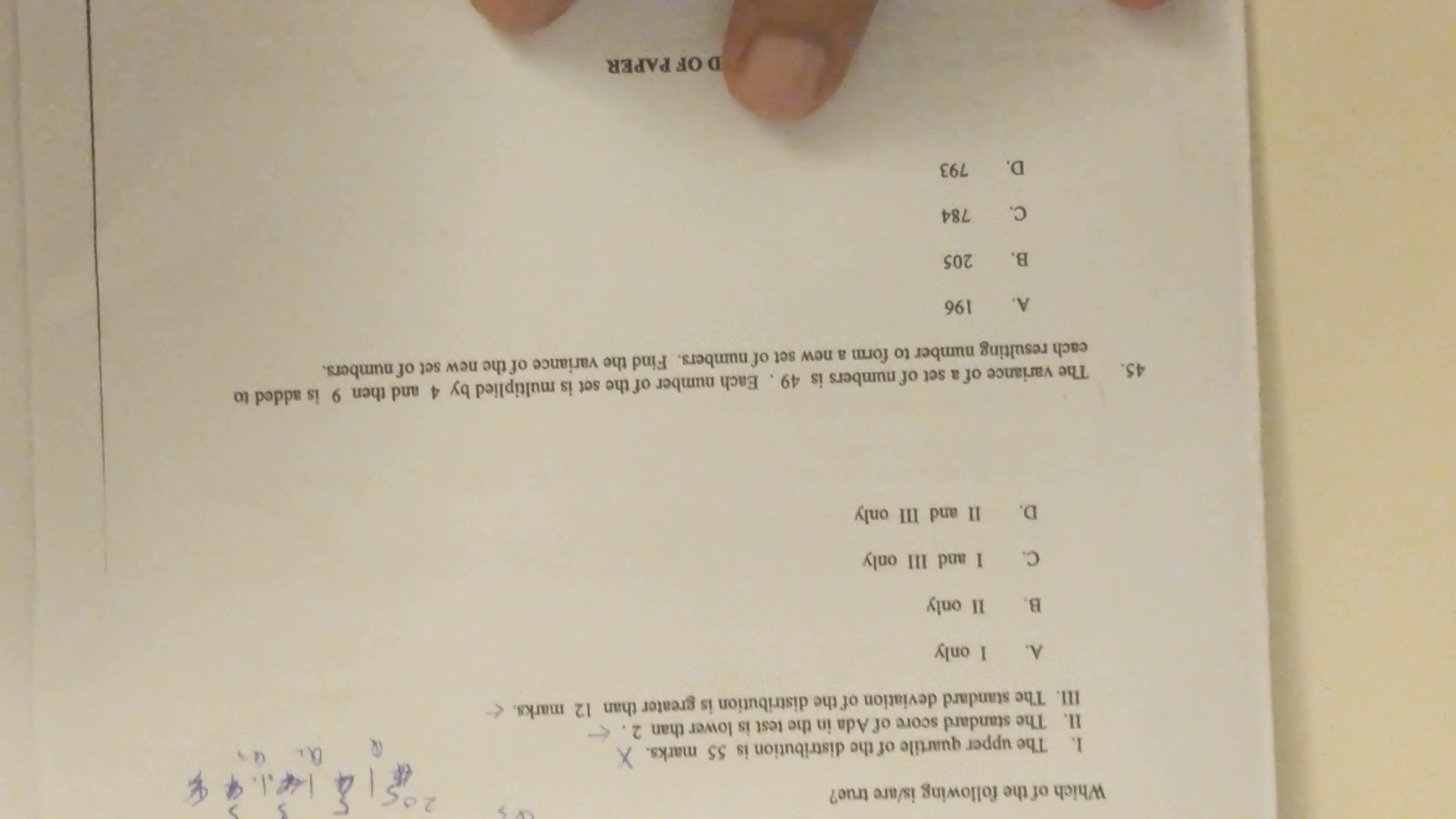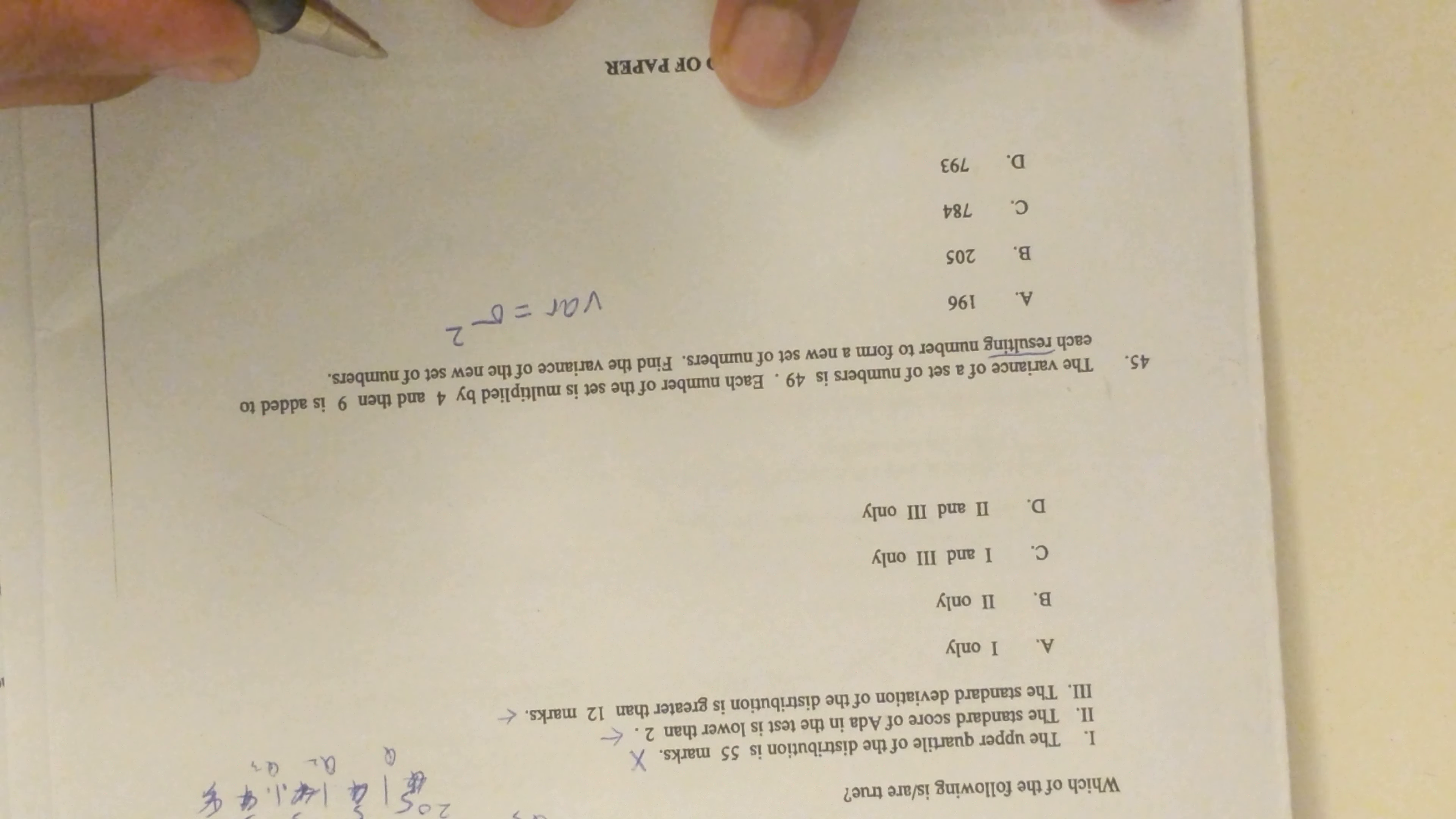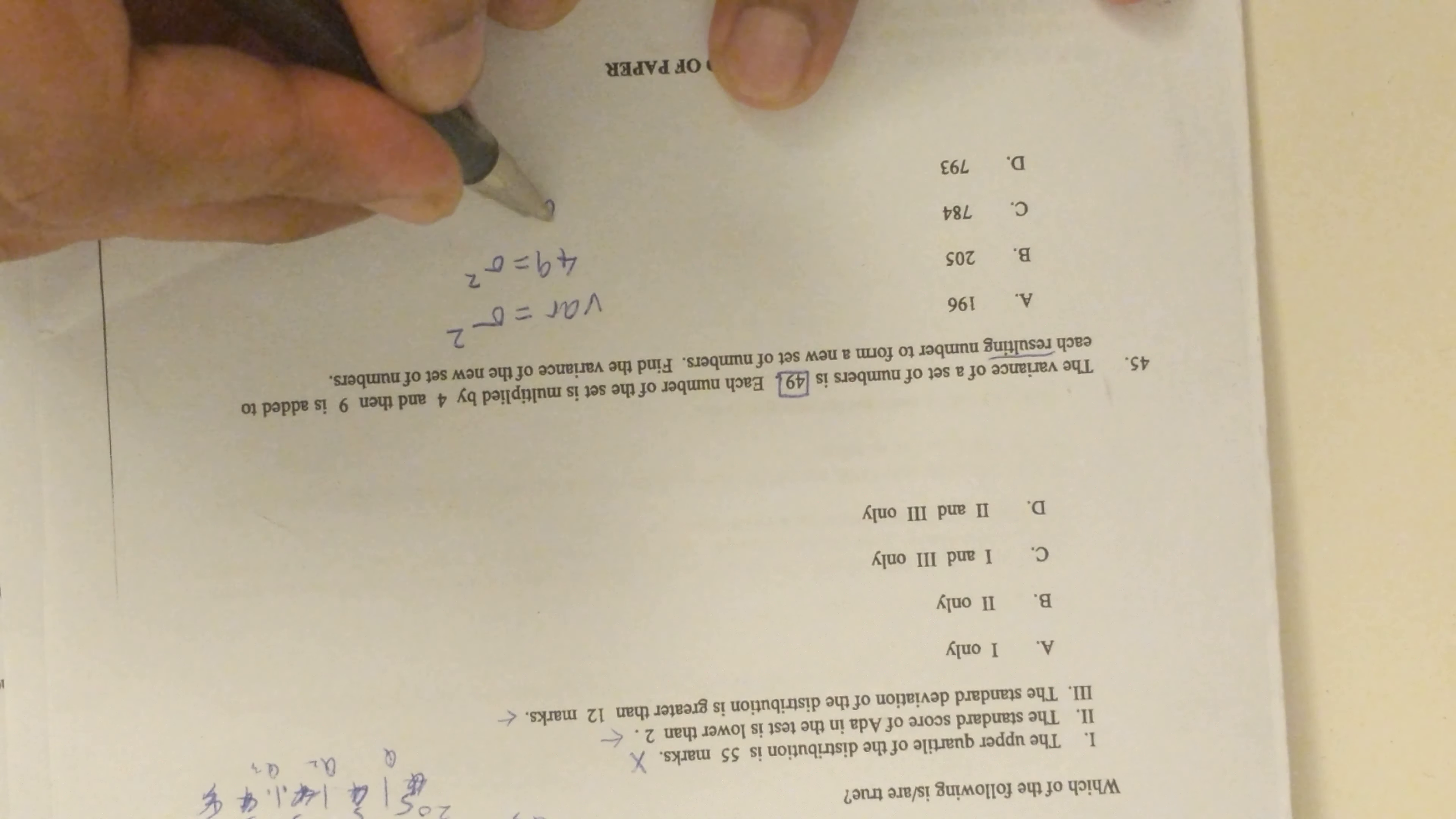For number 45, you may not have heard of this thing called the variance, but variance is actually simply SD squared. They tell you that the variance is 49, so 49 is SD squared. To get rid of the square, you put square root on the 49, so you get 7.